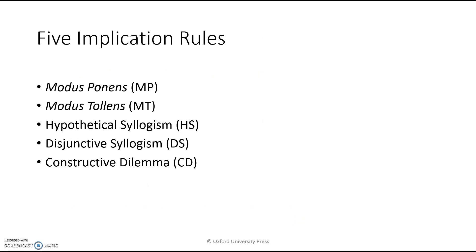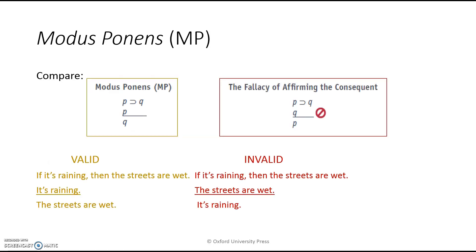The main action I want you to learn in this unit is the five implication rules. These are forms of logically valid arguments in propositional logic. They will help you construct your own valid arguments, identify valid arguments, and identify invalid arguments. The first rule we're going to look at is modus ponens — probably the most important and most commonly used, so you need to know this.